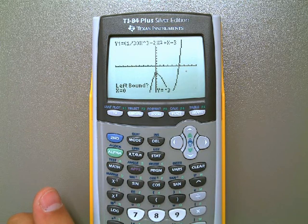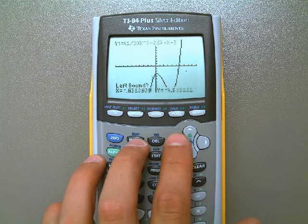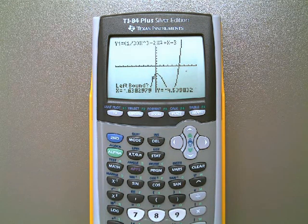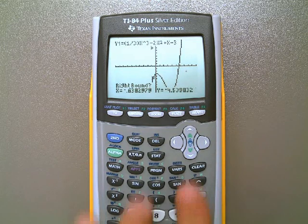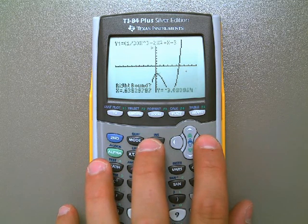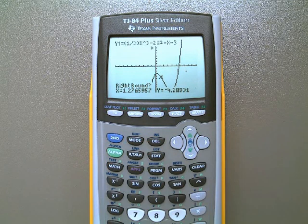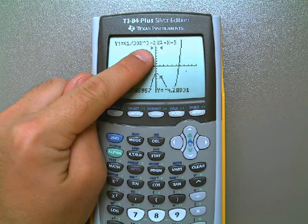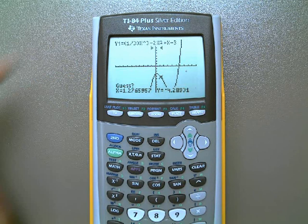And it's going to ask me what the left boundary is. Well, I want the maximum somewhere between this, so I hit enter, and the right boundary here. Now, notice up at the top, it shows me that I'm looking in between these two areas. There's my left and right boundary.